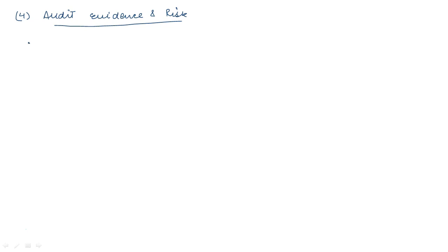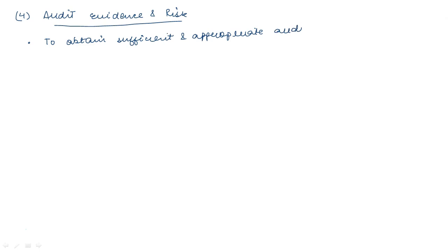Moving on to audit evidence and risk. As an auditor, the requirements for conducting a proper audit are: first, to obtain sufficient and appropriate audit evidence. After that, you are required to reduce audit risk to an acceptable low level. If the risk involved in the audit is high and you leave it, your degree and professionalism will be compromised.